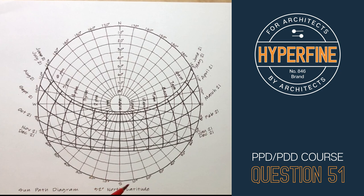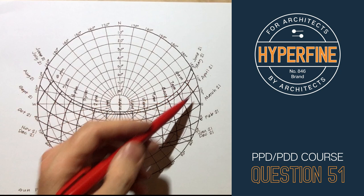Okay, here's the sun path diagram from question 51. Someone asked me how to do this, and the question said, what's the altitude and azimuth at August 21st?